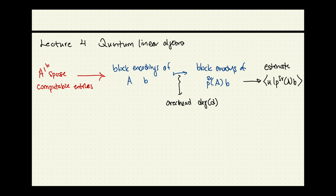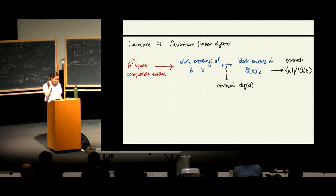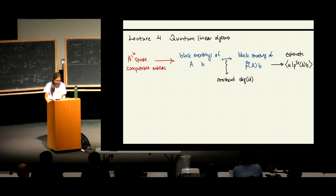We can actually use this and get something from the output, like some inner product estimate. If you combine all the pieces together, you get something that takes polylogarithmic time in the input dimension. If you gave me A and B classically and told me to estimate the first entry of P of A times B, I would perform the polynomial multiplication and this would take time linear in the dimension of A and B. But somehow, using this, we're doing significantly better. There's been a lot of work trying to see whether you can instantiate this to give speedups for real-world tasks.